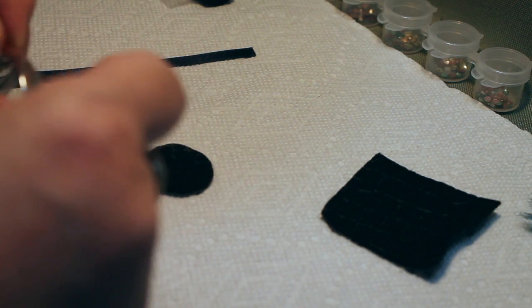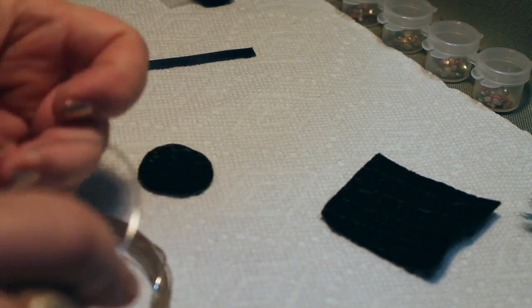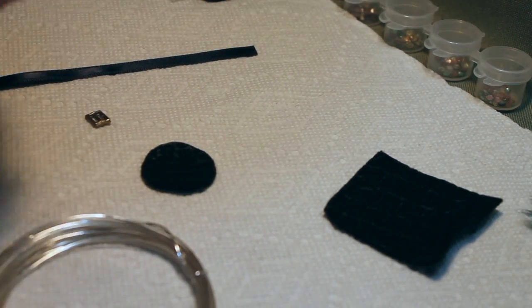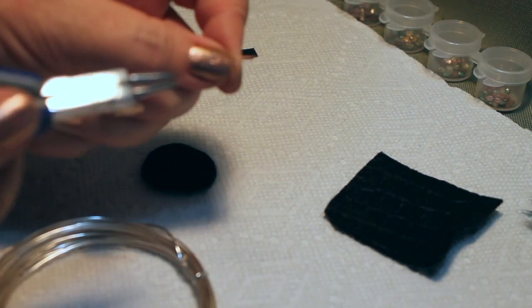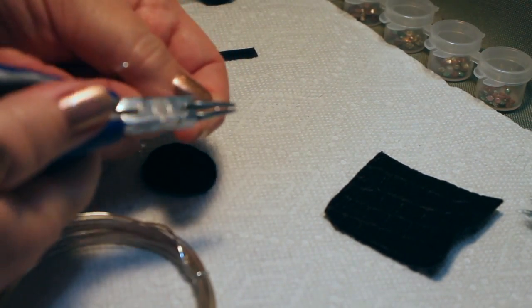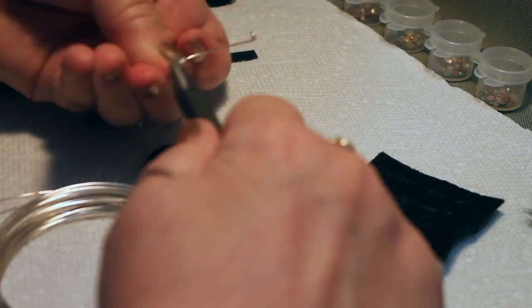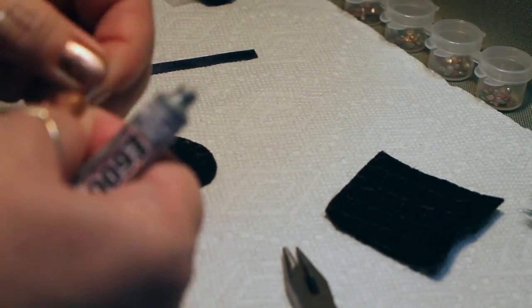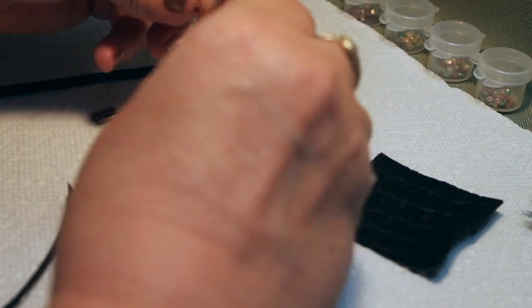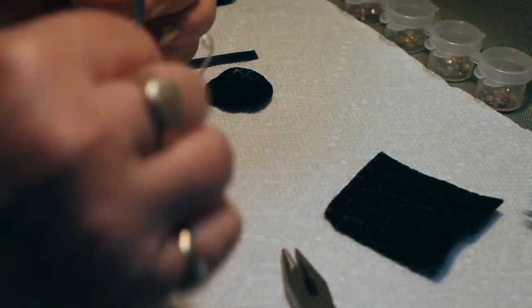Now as that dries I'm going to make a headband using the silver wire. Just cut out a length and bend it around the doll's head and then curl up the ends so you don't get poked. Now take some black ribbon, glue around the inside of the wire and press the ribbon into it.